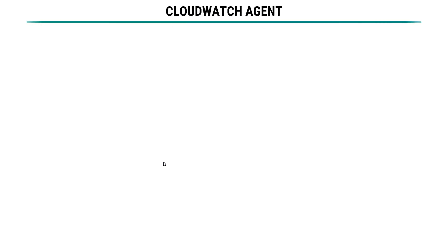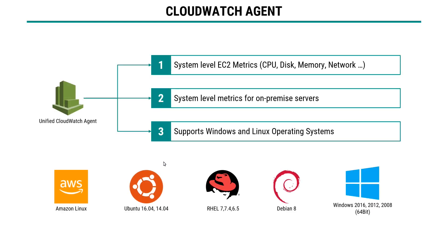Using this Unified CloudWatch Agent, we can collect system-level metrics from EC2 instances like CPU, disk, memory, network, process, swap, and so on. I won't go into detail on every metric — I'll concentrate on installing and configuring it. We can also use this agent to collect system-level metrics from on-premise servers, and it supports both Windows and Linux operating systems.